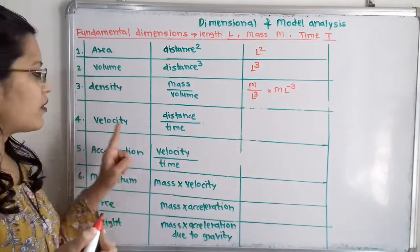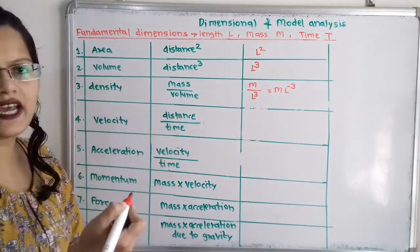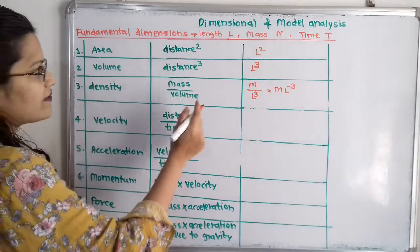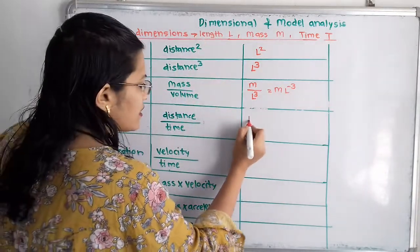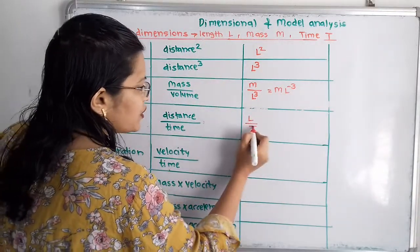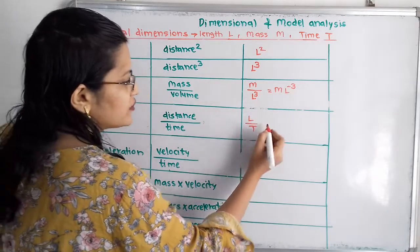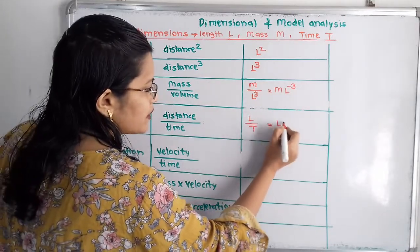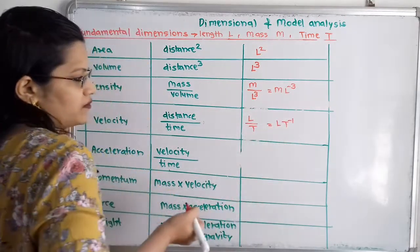Then velocity. It is distance by time. For distance I will take length L divided by time T. Shifting T to the numerator, it will become L into T raised to minus 1.